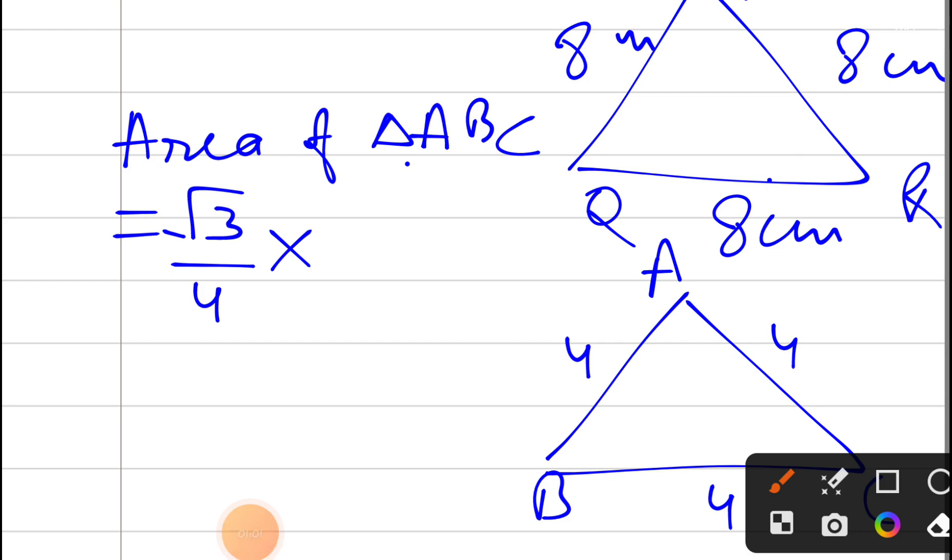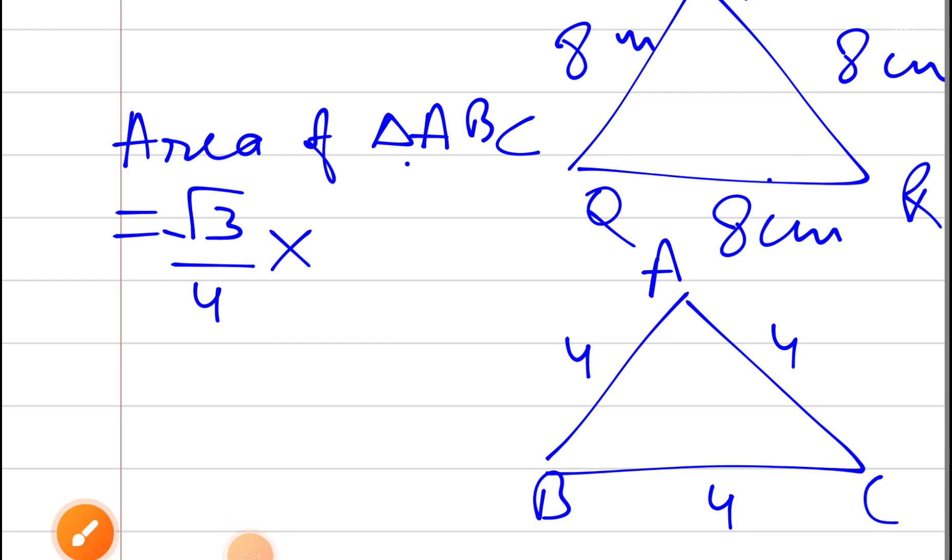So guys, after this, let's put the value. Basically the area of equilateral triangle is root 3 by 4 into side square or side into side. So the side of new triangle is 4 which is 4 squared.